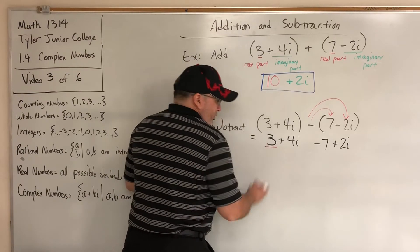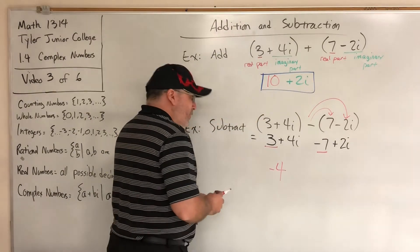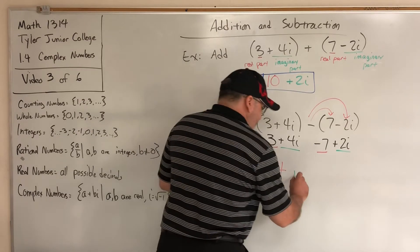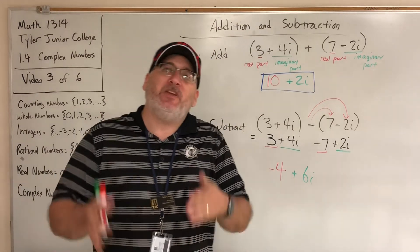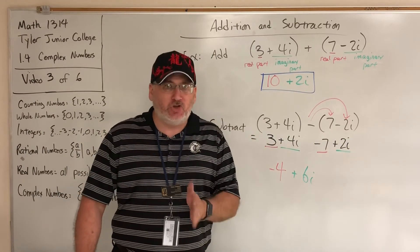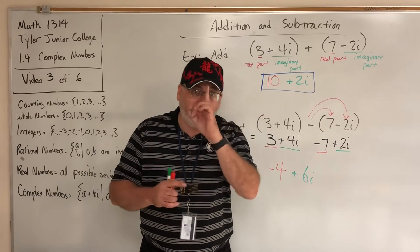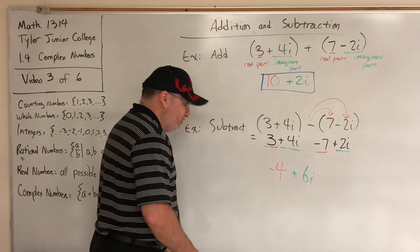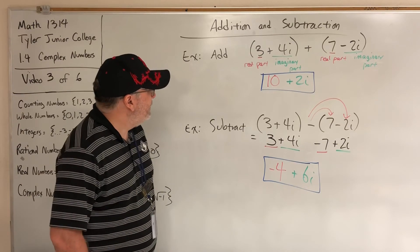The real parts: 3 and negative 7 combine to give negative 4. The imaginary parts: positive 4i and positive 2i combine to give positive 6i. Note — don't think of this as 6i squared; squaring means multiplying something by itself, and we're only adding here. Combining i terms with i terms just gives you a different number of i's.